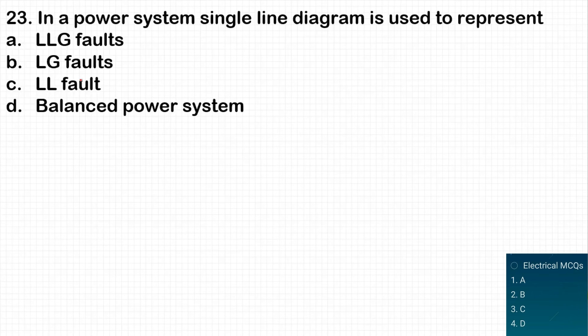The next question: in a power system, a single line diagram is used to represent what? A single line diagram is used to represent a balanced three-phase power system. Faults generally cannot be represented by a single line diagram. So option D — balanced power system — is the correct answer.